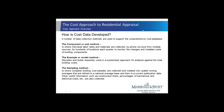The component or unit method involves collecting individual labor rates and materials by phone surveys from multiple sources for hundreds of locations each quarter, monitoring changes and install costs of building components. The example or model method allocates and builds assembly costs in a systematized approach for analysis against total building costs. Not everyone contacted participates voluntarily in data collection, so by employing these different methods Marshall & Swift gets the best and most truthful rates possible.